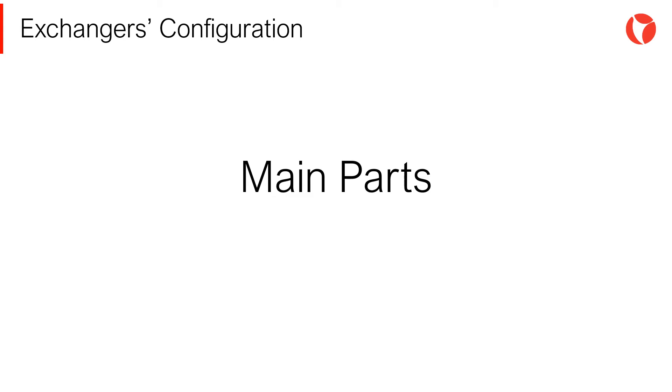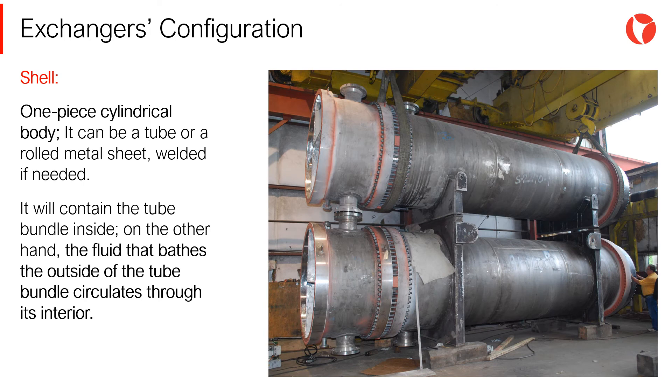Next, the main parts of a shell and tube heat exchanger will be described. One of the main parts is the shell. The shell is a one-piece cylindrical body. It can be a tube or a rolled metal sheet, welded if needed. It will contain the tube bundle inside. The fluid that bathes the outside of the tube bundle circulates through the interior of the shell.